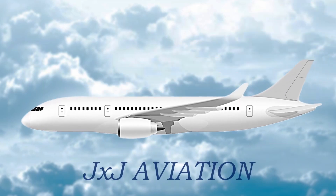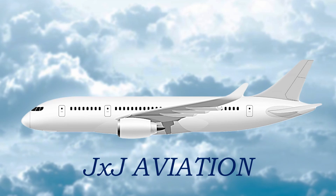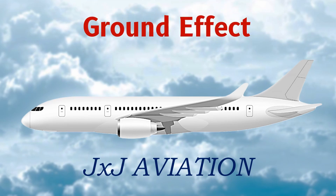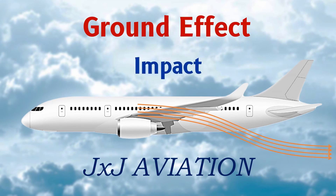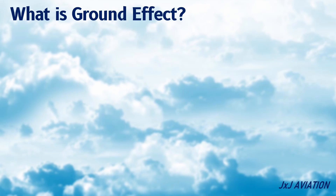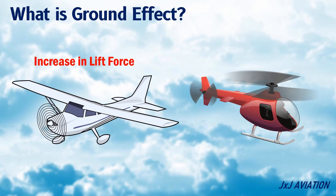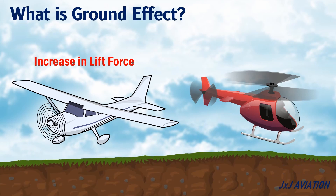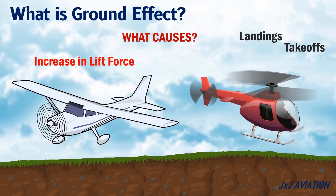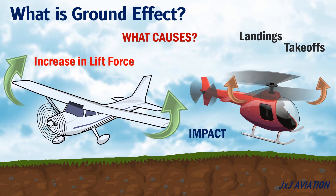Hello and welcome to JXJ Aviation. In this video we will be looking at what is ground effect and its impact on aircraft and helicopters. Ground effect refers to an increase in the lift force on an aircraft wing or a helicopter's rotor blades when the aircraft or helicopter is close to the ground. This ground effect plays a part during landings and take-offs. So let's see what causes an increase in the lift because of the ground effect and the impact it has on aircraft and helicopters.